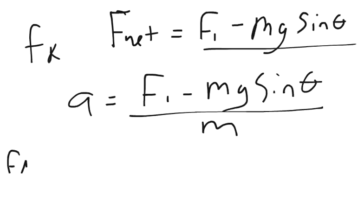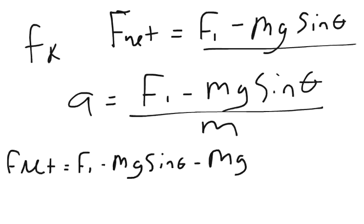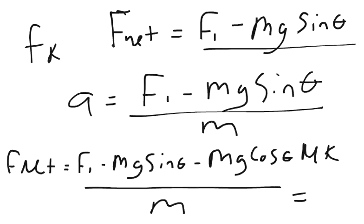So, we also have to subtract this out of our net force. So, net force equals F1 minus mass times gravity times sine theta minus mg cosine theta, and we times that by the coefficient of kinetic friction. And then we can divide all of that by m, we get acceleration. And so, that would be your answer to number two.